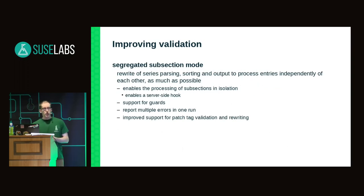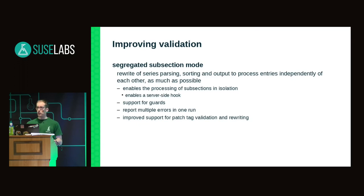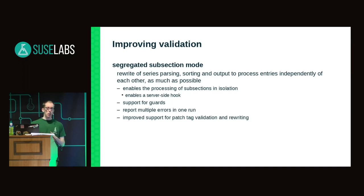I'm working on processing each subsystem section — actually each patch — individually, so that if one subsection becomes invalid it doesn't prevent processing other sections. This means a server-side commit hook could limit checking to the sections modified by a specific commit. If the net tree changes are valid but the IPsec tree has become invalid due to a rebase, the server sees the IPsec tree is invalid but also sees it's not the section being modified, so the commit is still accepted. Fixing the invalidated patches can be deferred until someone needs to modify that section.